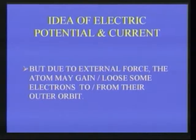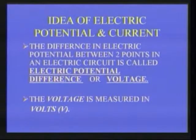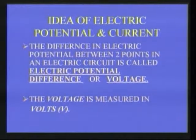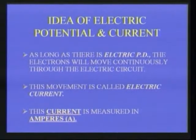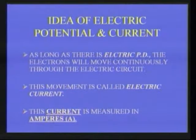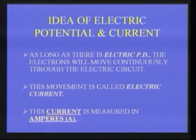The difference in electrical potential between two points in an electric circuit is called electric potential difference, or voltage. The voltage is measured in volts. As long as there is an electric potential difference between two points, electrons will move continuously through the electric circuit. This movement is nothing but electric current, and current is measured in amperes.